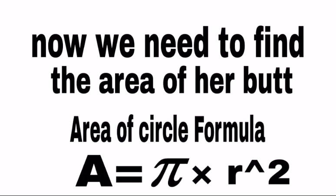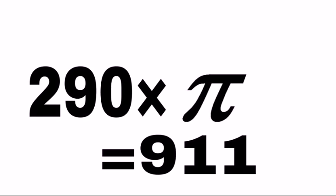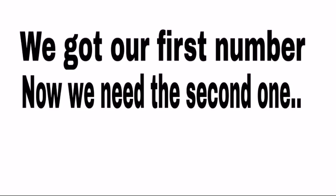Now we need to find the area of her butt. Area. Pi times radius squared. 290 times pi equals 911. We got our first number. Now we need the second one.